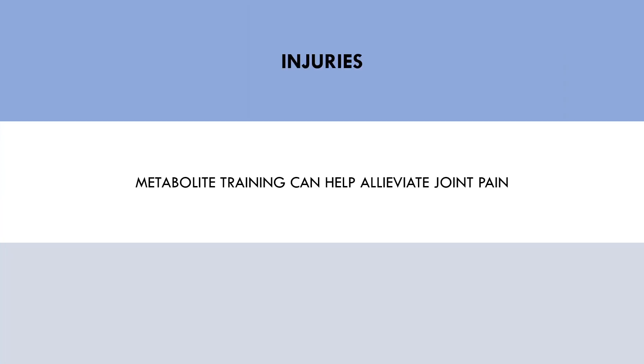The last consideration is injuries. If a trainee tends to develop joint pain with certain volume thresholds or with specific exercises, metabolite style training can be a strategy to alleviate pain while still training. This provides a hypertrophy response using lighter loads, causing less joint and connective tissue stress while minimising the risk of joint irritation.